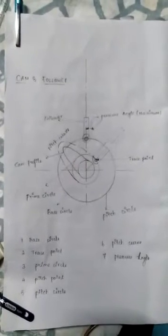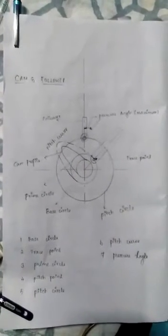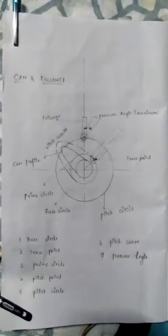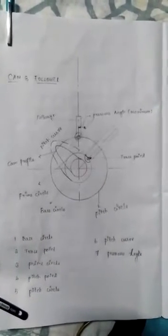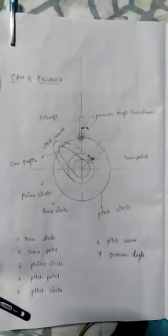Then trace point. It is a reference point on the follower to trace the cam profile such as knife edge of a knife edge follower and center of the roller of rotor follower.